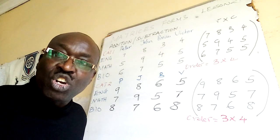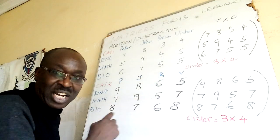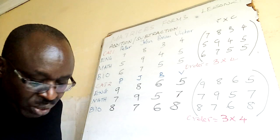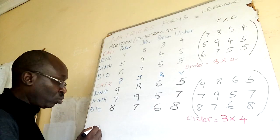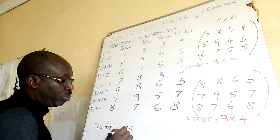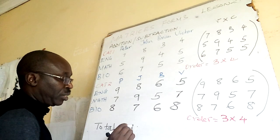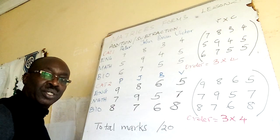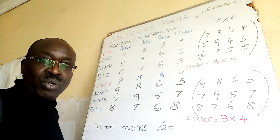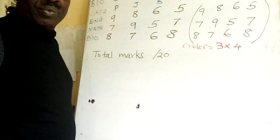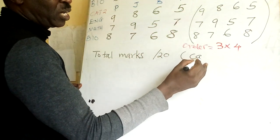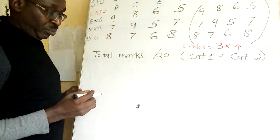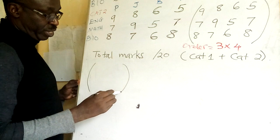Now, if you can get that, it is very easy for us to get the total. How do we get the total? I want us to get the total of this cut one and cut two. Cut one and cut two. So I will try to shift the camera so that we write them somewhere here. So here, I want us to do what? Total marks. Total marks out of 20.